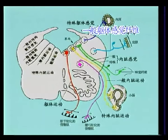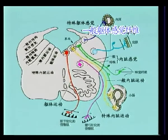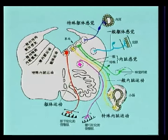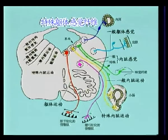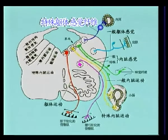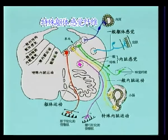六，一般躯体感觉纤维胞体聚集成神经节，如三叉神经节，周围突接受皮肤、肌、腱和大部分口鼻腔黏膜的一般躯体感觉，中枢突止于一般躯体感觉性核团，含此成分的脑神经有五、九、十。七，特殊躯体感觉纤维胞体聚集成神经节，如第八对脑神经的前庭神经节和蜗神经节，周围突至平衡觉和听觉感受器，含此成分的脑神经有蜗神经和前庭蜗神经。需指出的是，视神经实属中枢神经系。